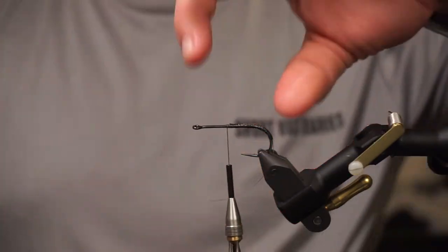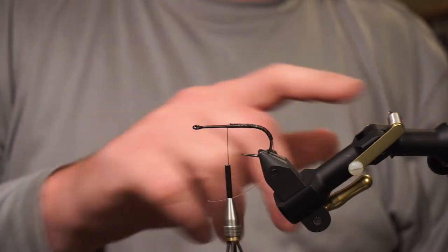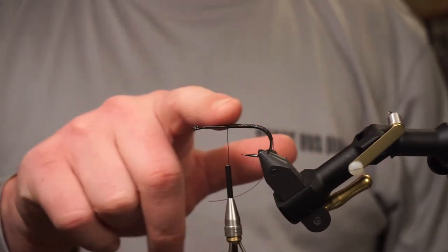Now you just tie the rest of your fly. Your fly is going to sit right here, whatever kind of fly you want to tie, be it a baitfish pattern, whatever. We're just going to have that tied in.